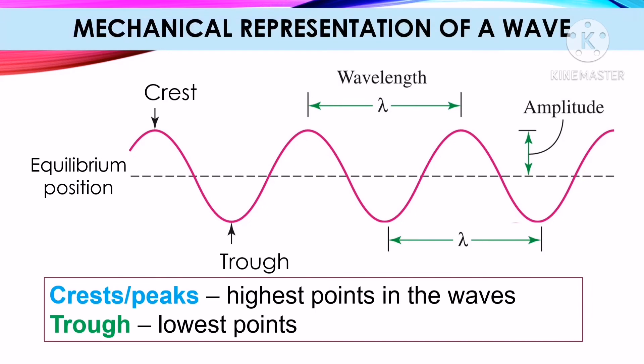Here is a mechanical representation of a wave. The broken line is the equilibrium position. The crest is the highest point in the wave, while the trough is the lowest point. The distance from one crest to the next crest, or from one trough to the next trough, is called wavelength.